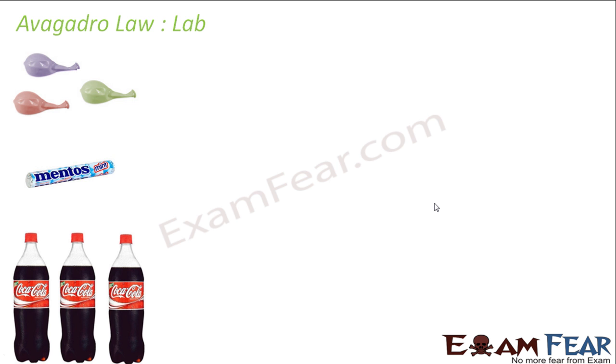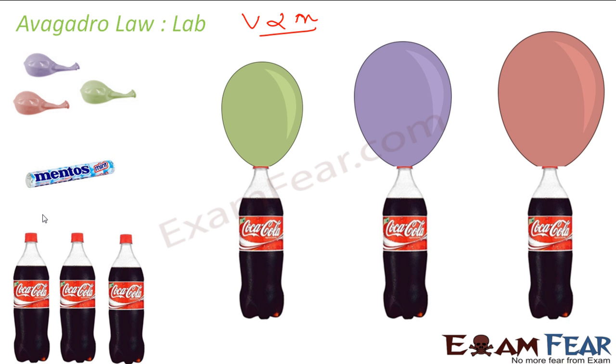Let's do a lab for the Avogadro Law. For this, what we can do is we can take three Coke bottles, three balloons, and one Mentos. So Avogadro Law says that volume is directly proportional to n. This is what we have seen. So what we will do here: in this bottle, let's suppose we have put 2 Mentos. In this, we will put 5 Mentos. In this, we will put 10 Mentos. Bottle 1, bottle 2, bottle 3.